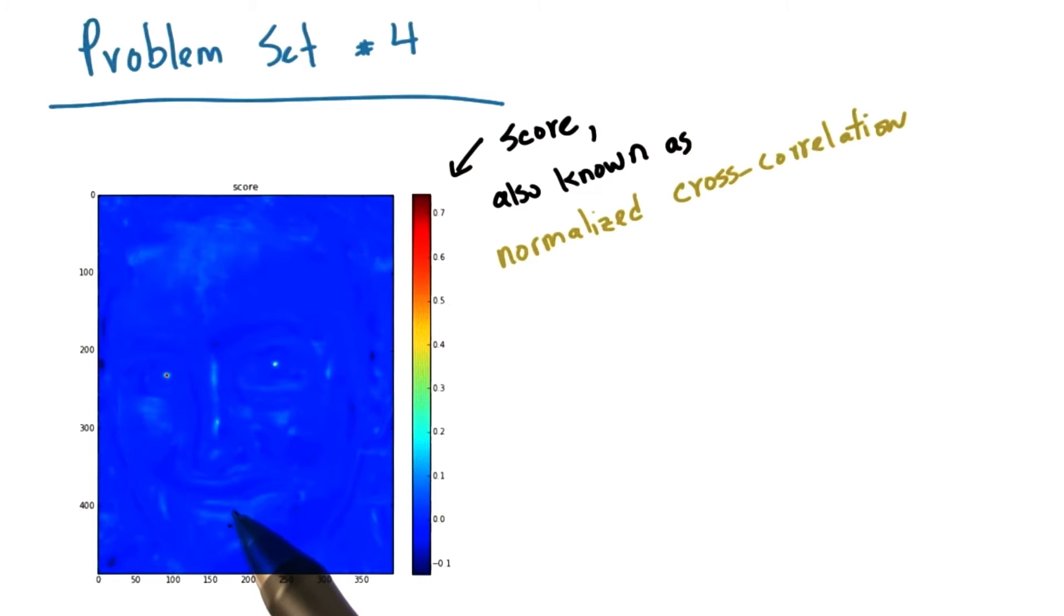Our next step is to sort all the pixels in the image according to their score. Note that the pixels with the high scores are the pixels that are most likely to belong to a red eye, as you can see here. This sorting step is what you will be implementing in problem set number four.